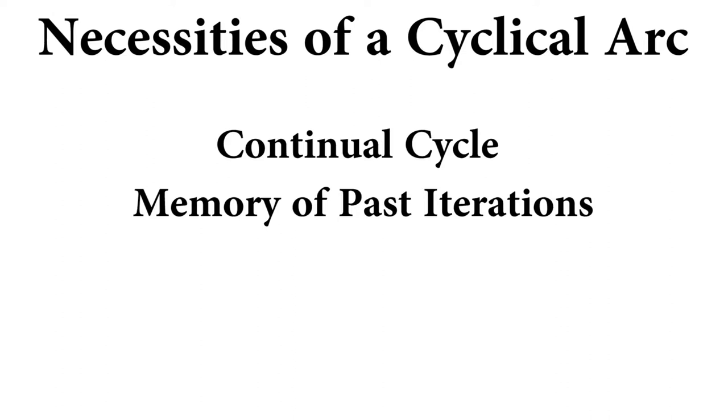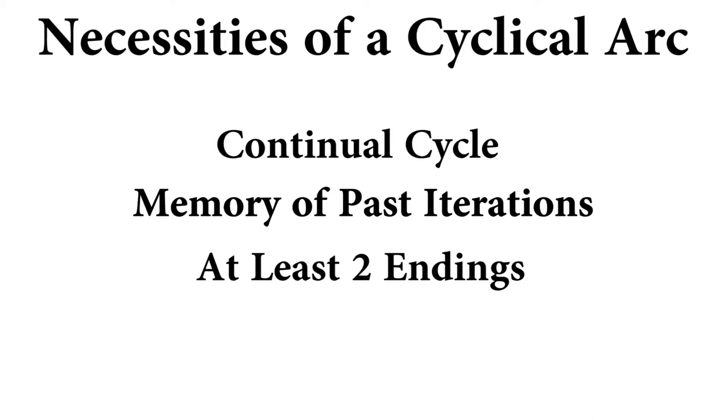There are three things that any narrative requires in order to present itself as a cyclical narrative. The first is that the narrative must form a continual cycle where it begins at one point and ends at the same point. The second is that there must be some memory of past iterations so as to indicate that the narrative is a cycle, instead of just having the player replay the same linear narrative. Finally, there must be at least two endings to the game — one constituting the end of the cycle and another the end of the game.